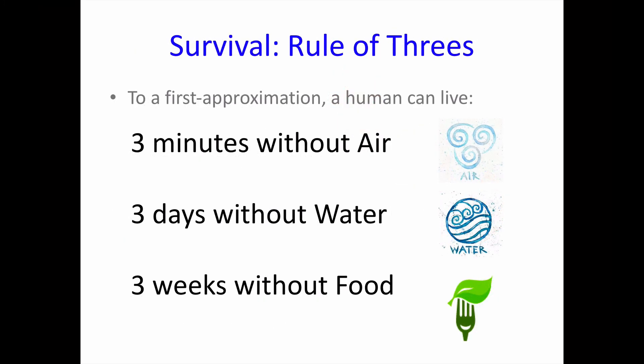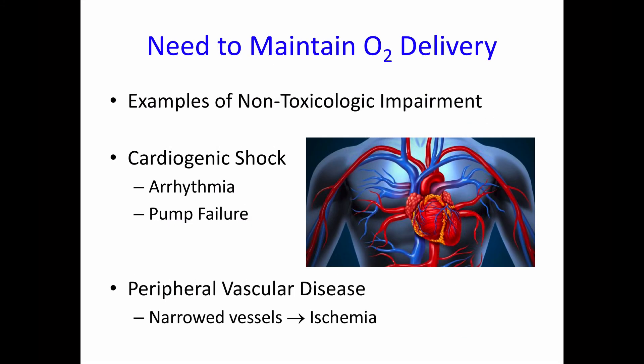How relatively important is oxygen as a basic need? In the wilderness survival literature, they have a rule of threes. To a first approximation, a human can survive three minutes without air, three days without water, and three weeks without food. On a minute-to-minute or second-to-second basis, therefore, maintaining oxygenation is the most important thing our bodies do. We need to maintain oxygen delivery to survive.